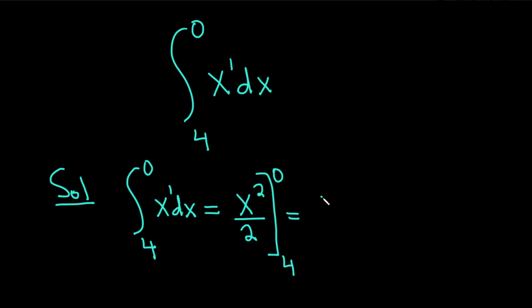So now you plug in the top number first, so you get 0 squared over 2. Subtract, plug in the bottom number, so you get 4 squared over 2. So this is equal to 0 minus 16 over 2, which is equal to negative 8.